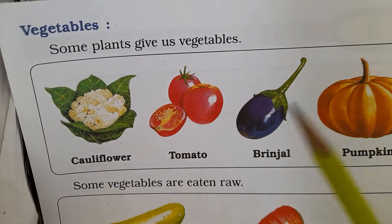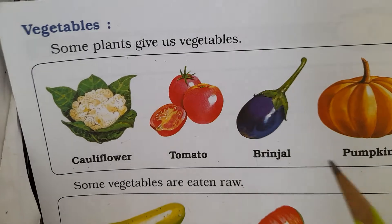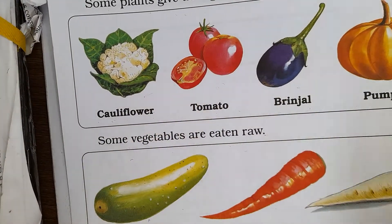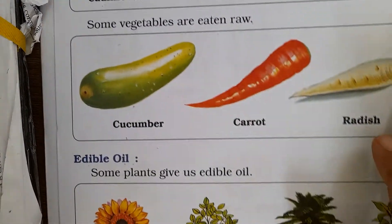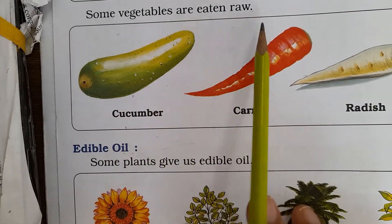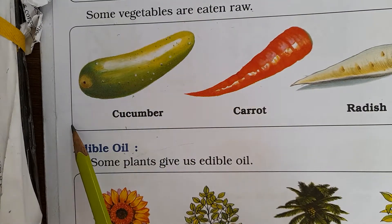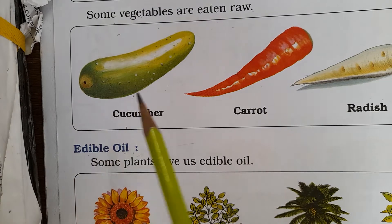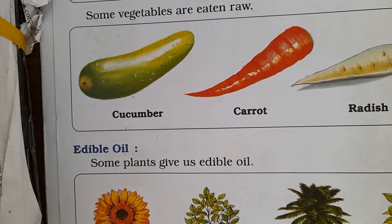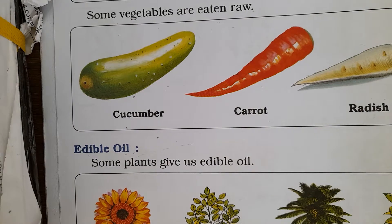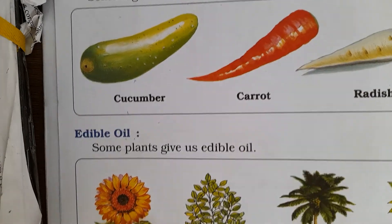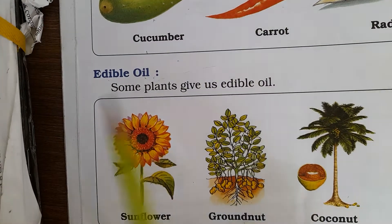Next are vegetables. We also get vegetables from plants. For example, cauliflower, tomato, brinjal, pumpkin. Some vegetables we eat raw, like cucumber, carrot, radish, and beetroot — what we can eat as a salad.